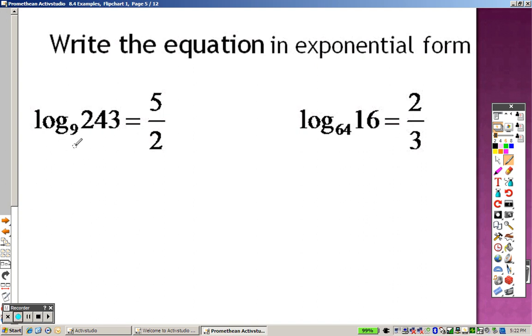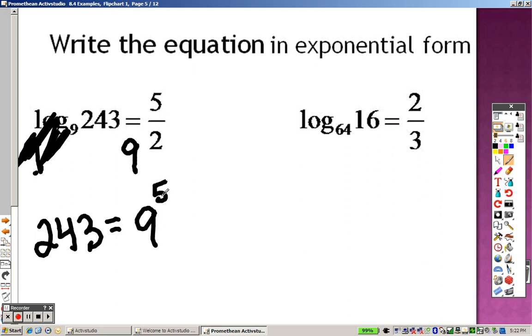Alright, rewrite these now. The base is 9, so that means I'm taking it all to the 9. So when I do that, these are gone. So I get 243 equals 9 to the 5 over 2.